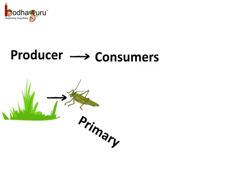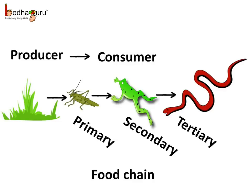The herbivores eat the plants to get nutrients — they consume the plants directly, so they are the primary consumers. For example, the grasshopper eats the grass, so we can say the grasshopper is the primary consumer. Then the carnivores eat the primary consumers. They consume nutrients and food from plants indirectly, so they are the secondary consumers. For example, a frog eats the grasshopper, so the frog is the secondary consumer.